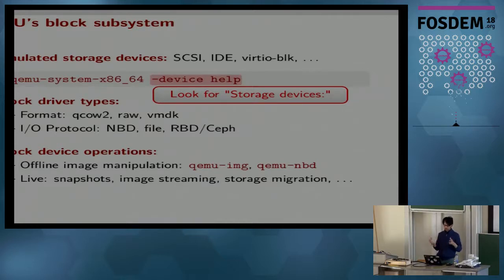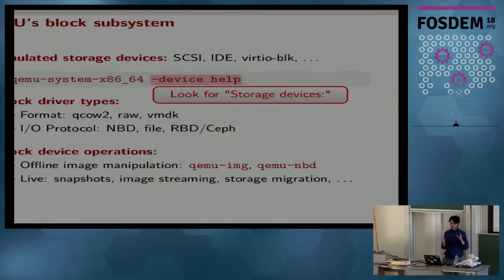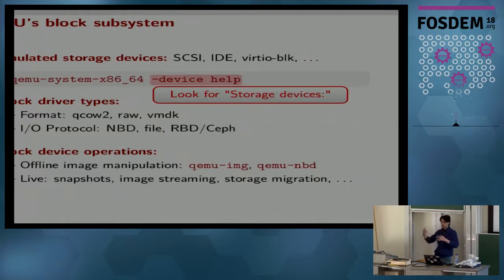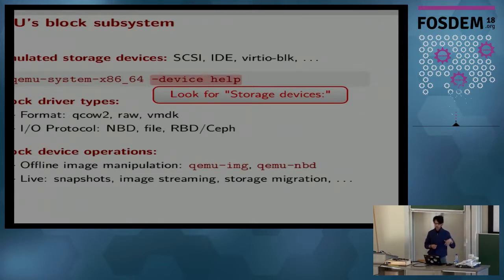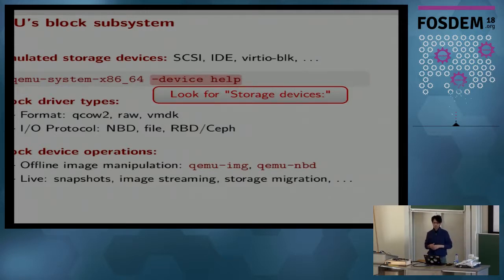QEMU's block layer is written in layers with a lot of code reuse between components. QEMU offers different types of block drivers. One is a protocol driver — how QEMU interprets data on the host. The format driver is where you recognize popular names like QCOW2, QEMU's native image format, as well as VMDK and other formats. For the protocol driver, you see things like NBD or network block devices and so forth.